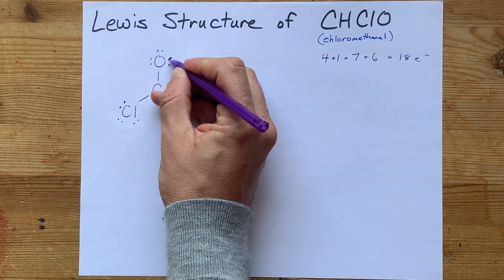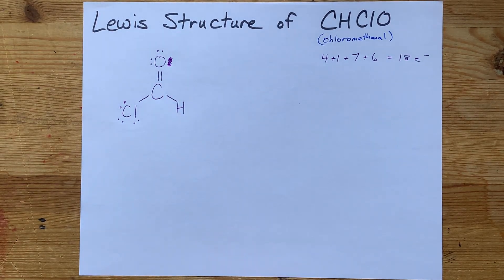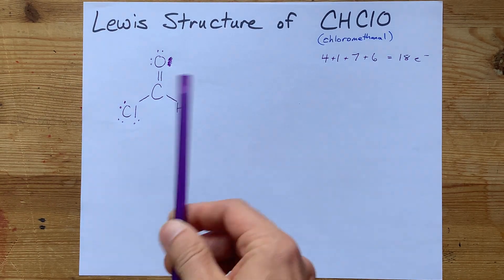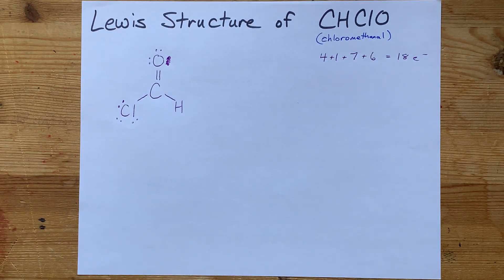I'm going to move a lone pair from that oxygen to become a bonding pair between it and carbon. And now carbon has a full octet, 2, 4, 6, 8 electrons as well.